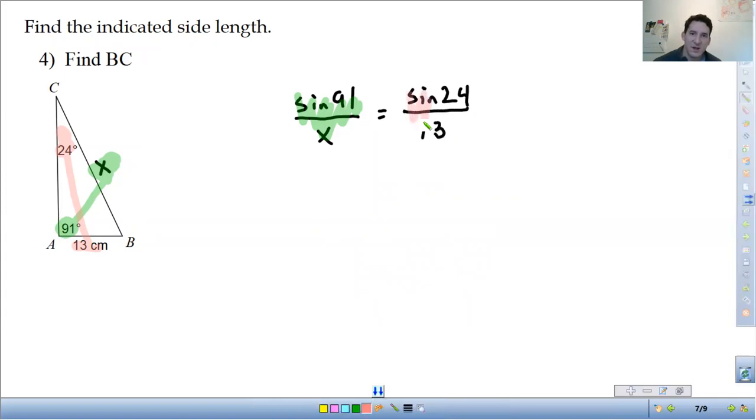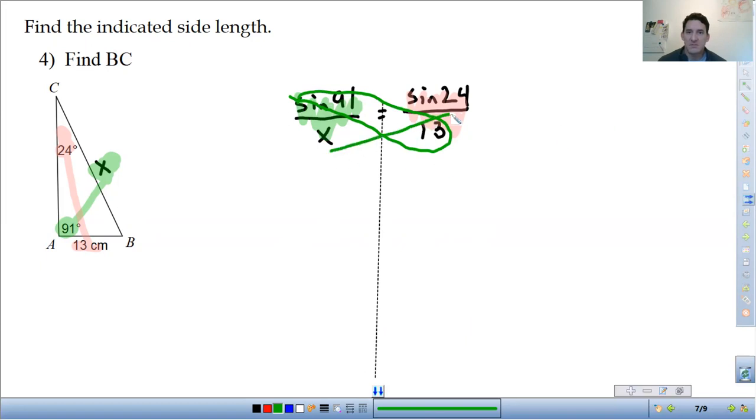So we have a proportion. What we can do is actually just cross multiply to solve the proportion. I think that will be the easiest thing, the quickest way to solve this. So I'm going to do top of this one times bottom of the other one, and then bottom times top. So I'll do that here, so it will be X times the sine of 24 is equal to 13 times the sine of 91.